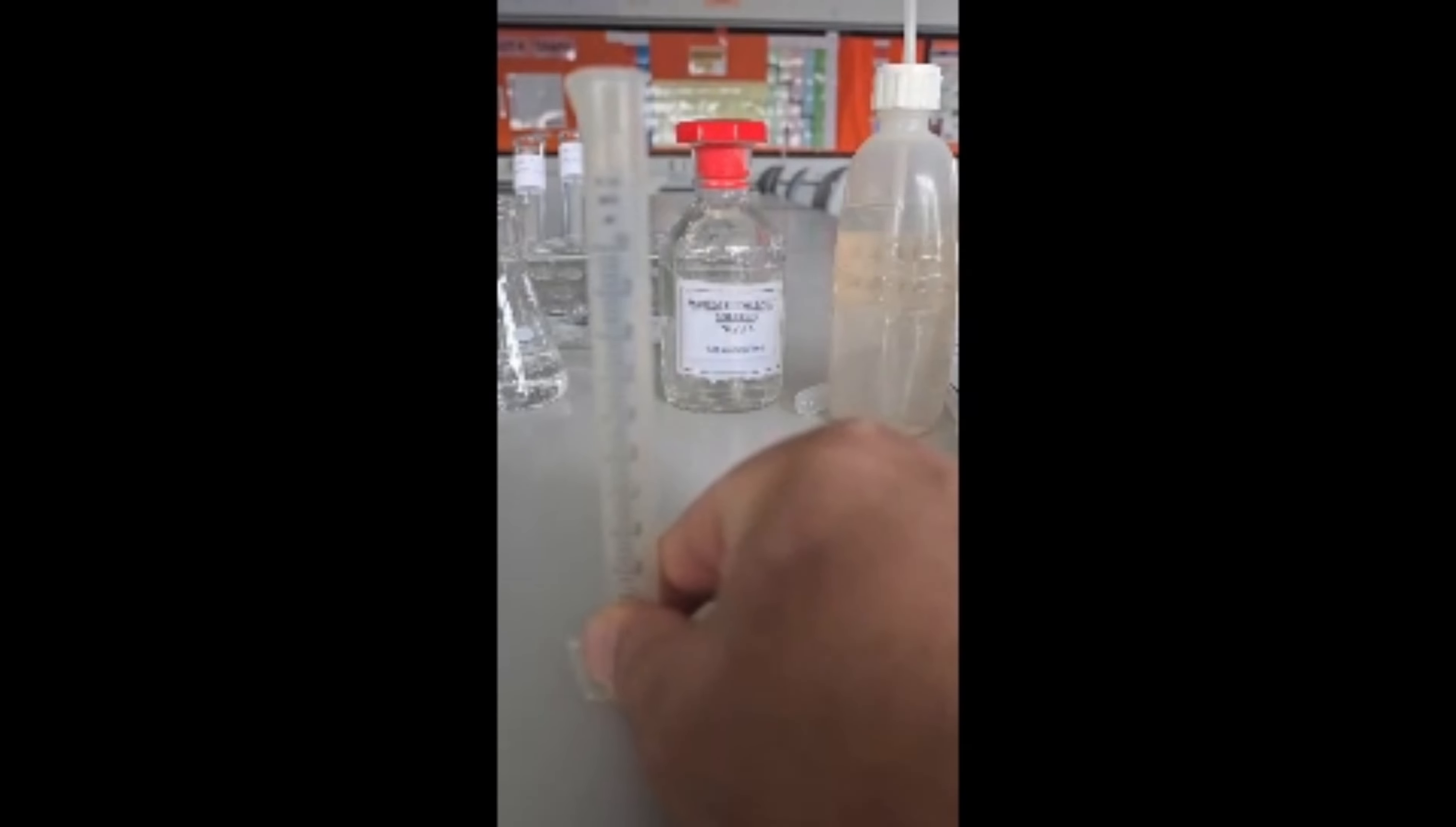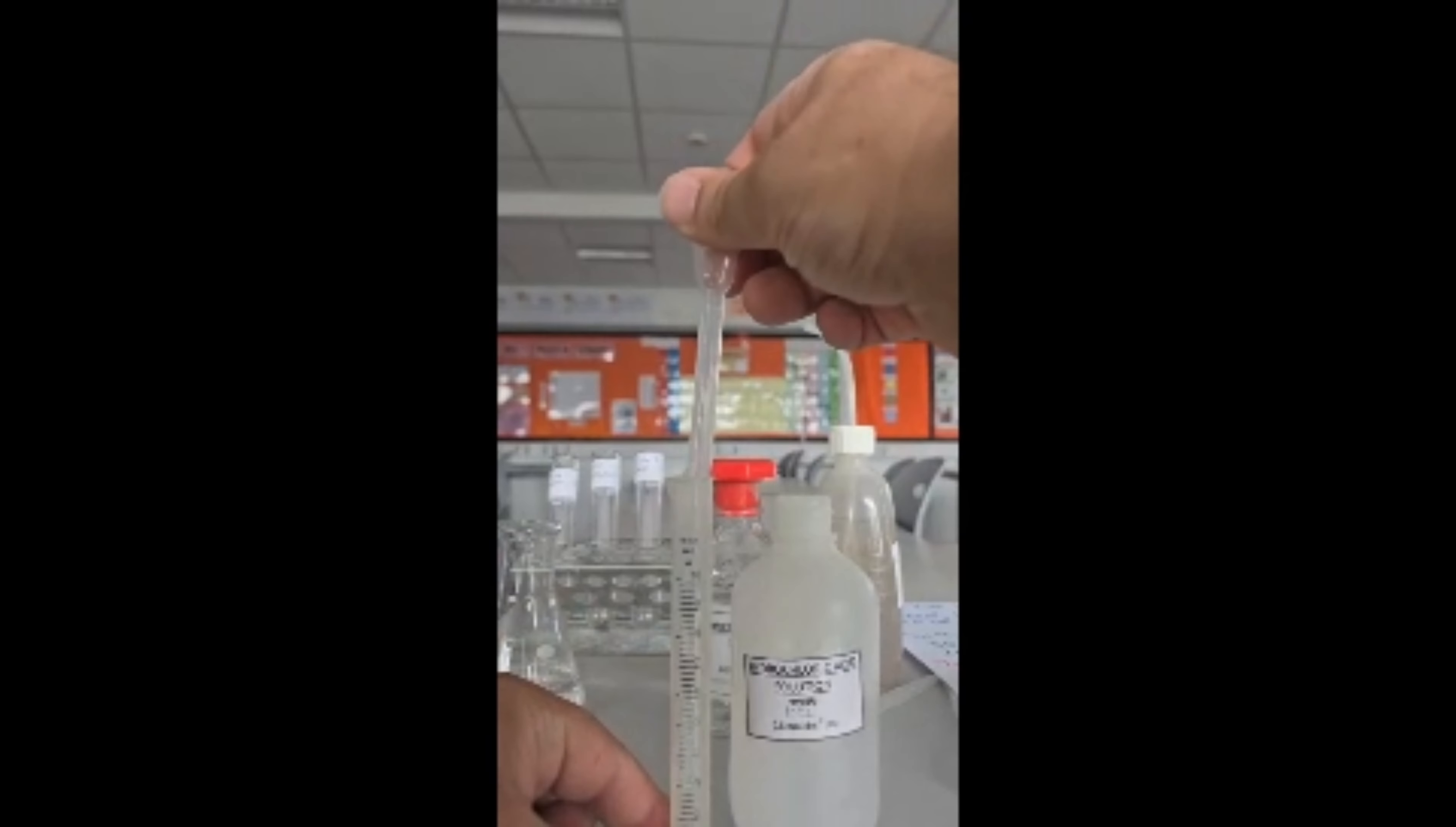Transfer that to the conical flask. Use a 10 centimeter cubed measuring cylinder and place into that your hydrochloric acid. We are measuring 10 centimeter cubed of the hydrochloric acid.